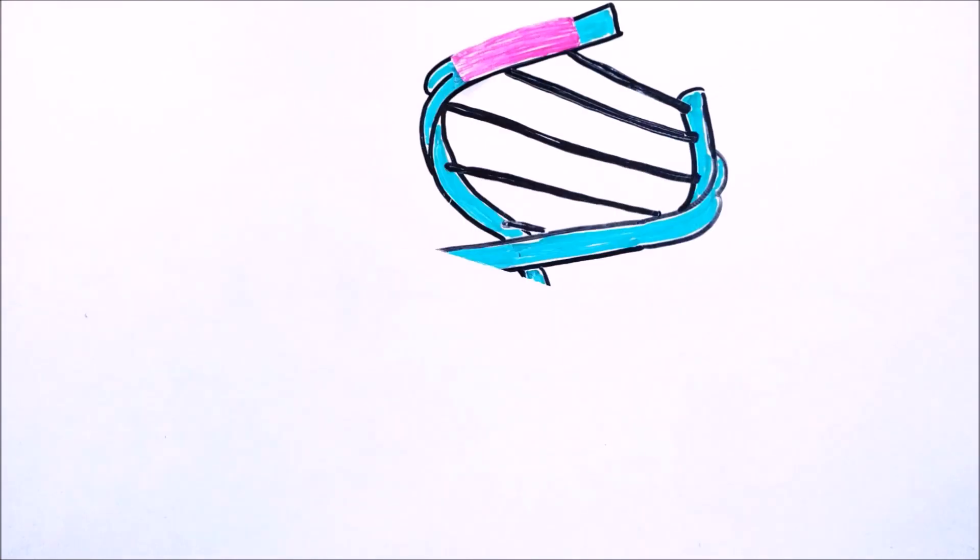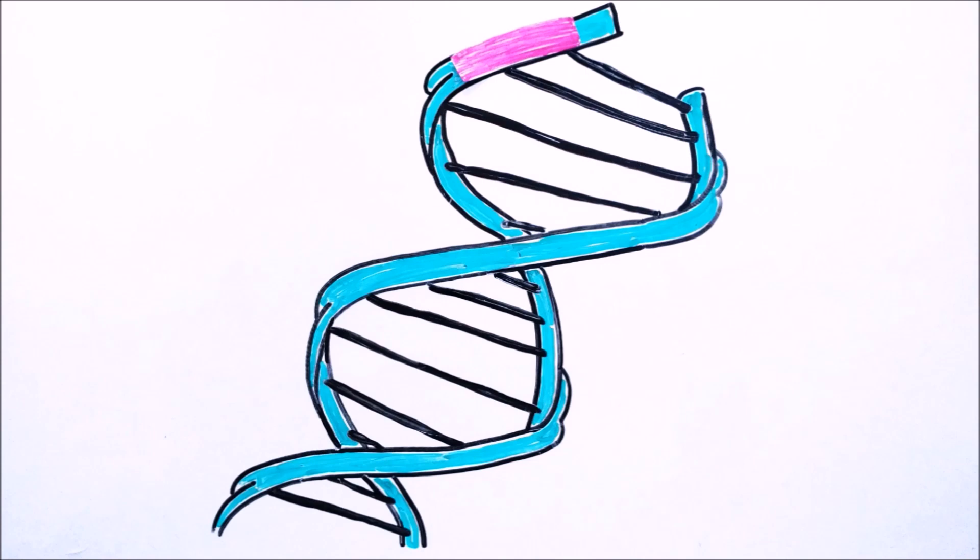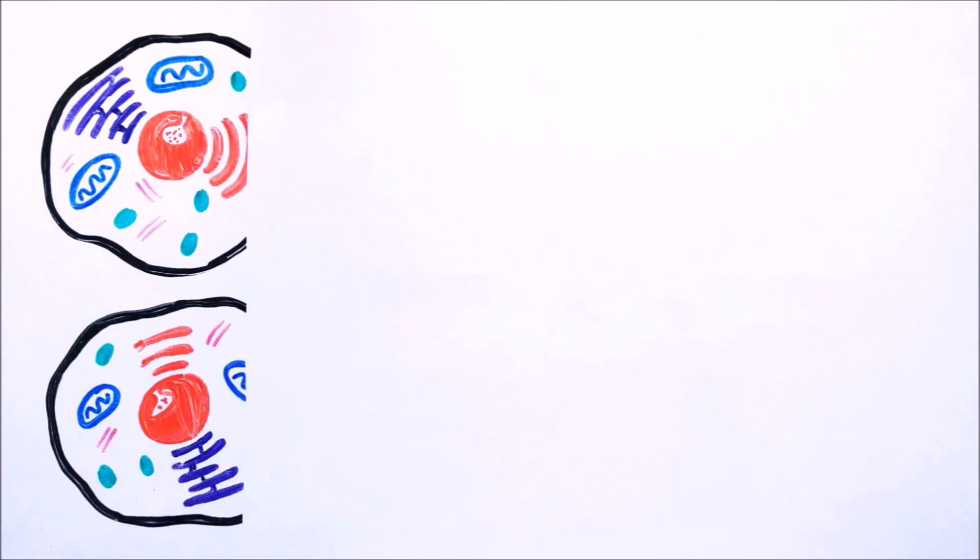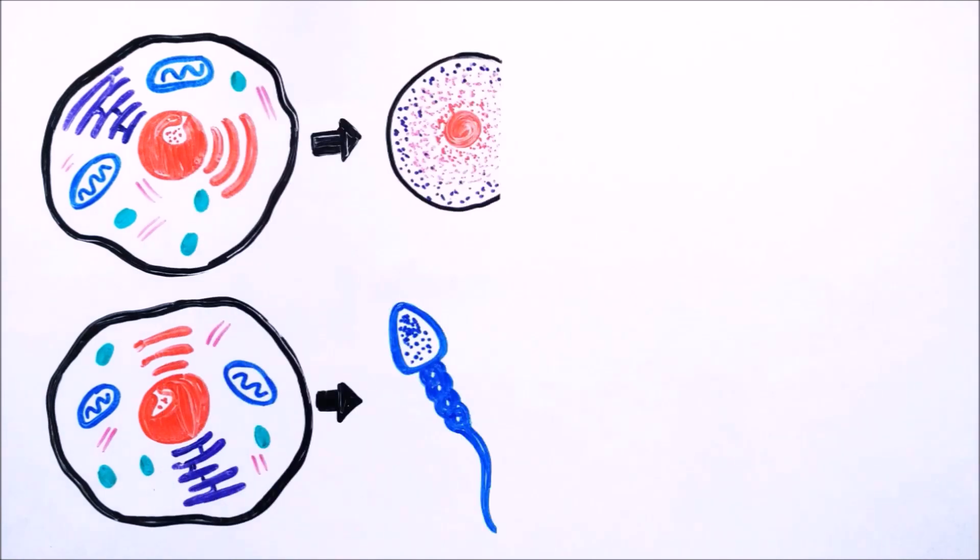Transposition is the movement of a section of DNA to a different position in the DNA. If this transposition activity happens in the cell that makes egg or sperm, then the resultant DNA is transferred into offspring also.